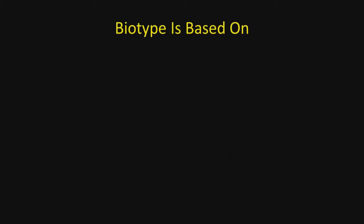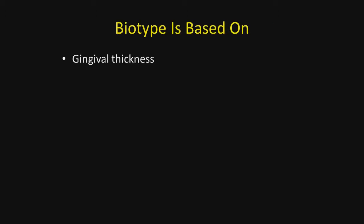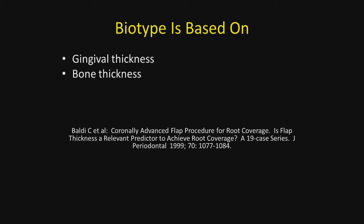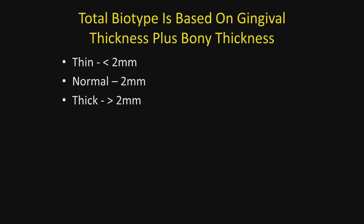Biotype, classification, and clinical significance. The biotype is based on two things: the gingival thickness and the bony thickness. This classic article by Baldy gives us an idea, scientifically, of what a gingival thickness should be — it should be at least one millimeter thick. The bony thickness, however, has never been determined.